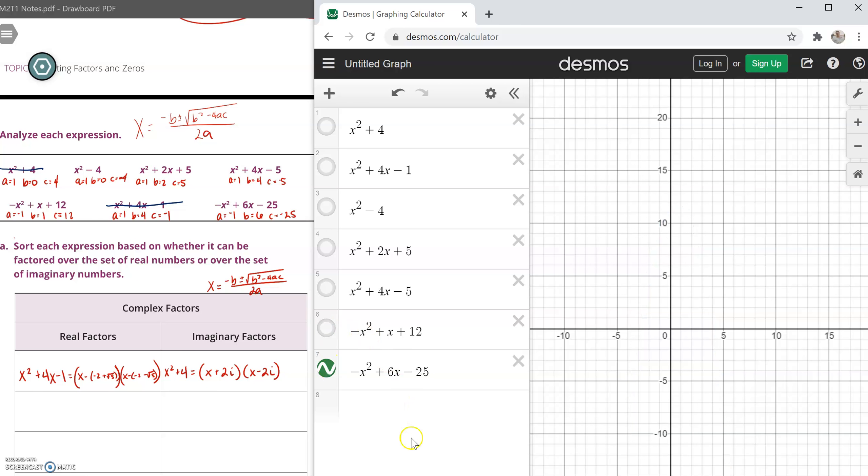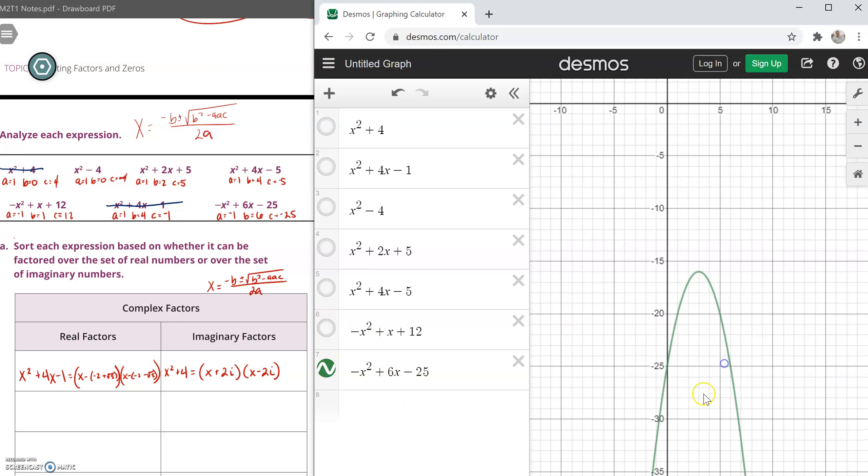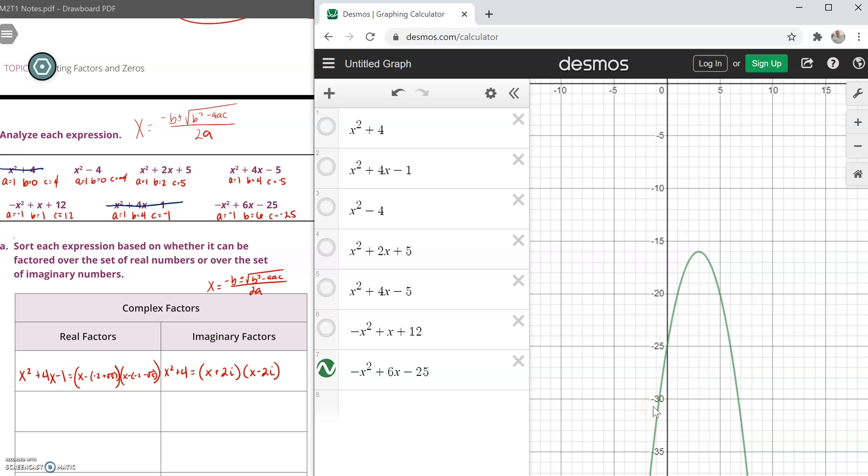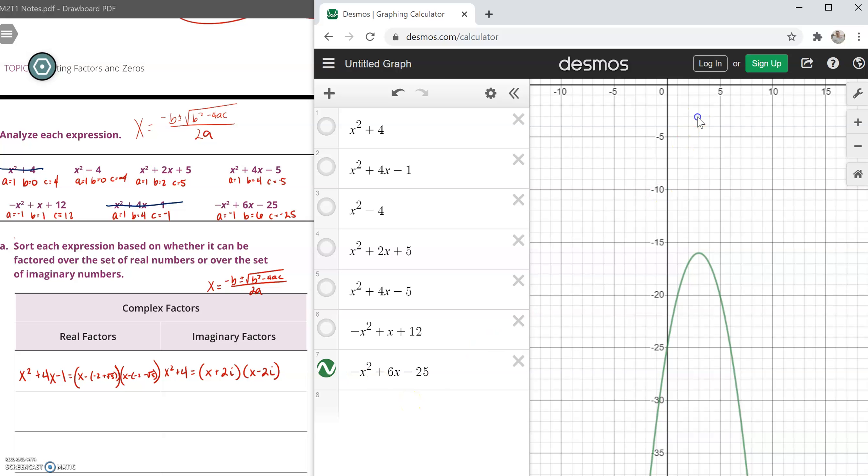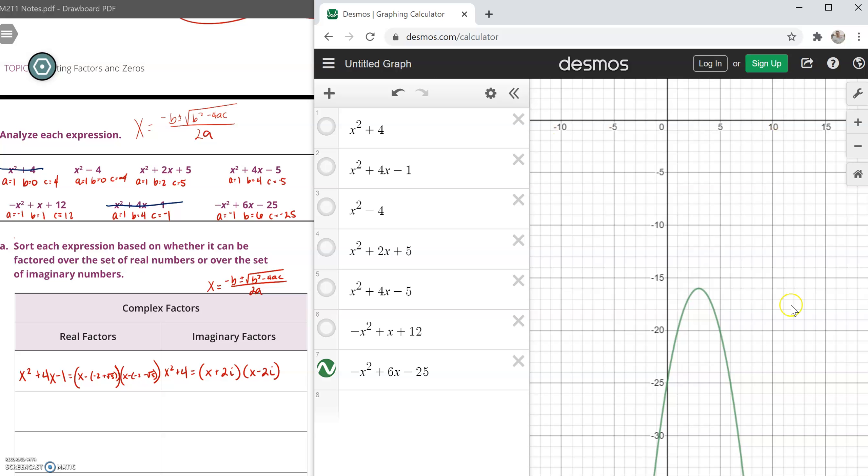And the last one. We're going to have to move our graph. It's way down here. Notice again, it's flipped. It's pointing down. Again, that's because of the negative on the x-squared. But our x-axis is way up here. It's never going to cross it. So does this expression have real factors or imaginary factors? Use the quadratic formula to confirm your guess.